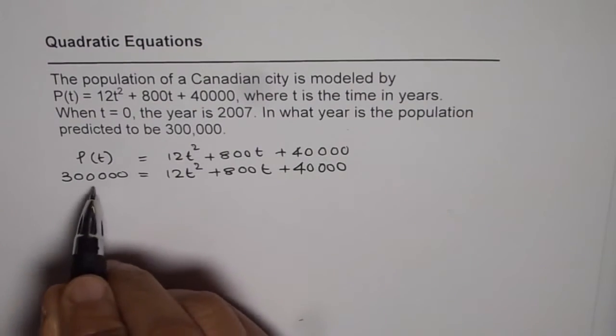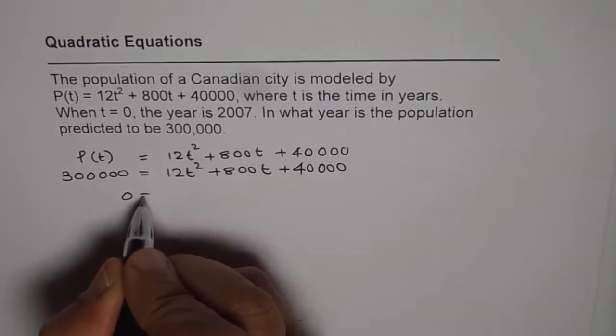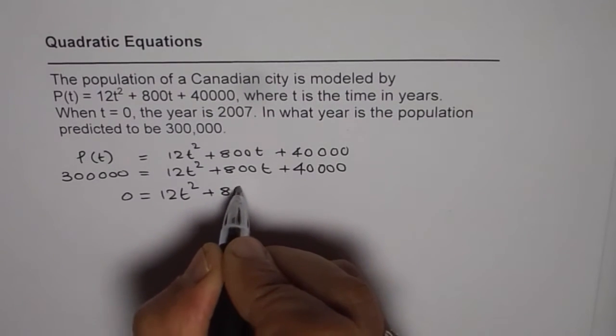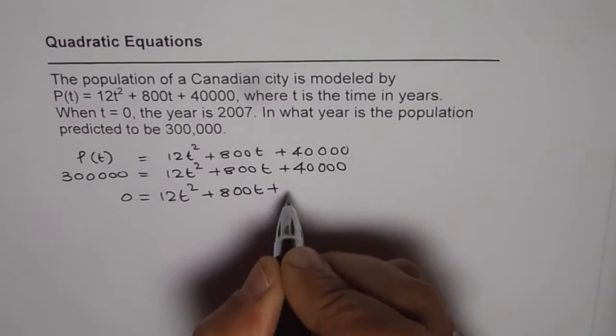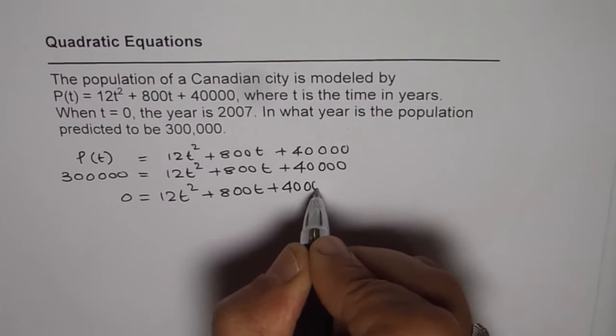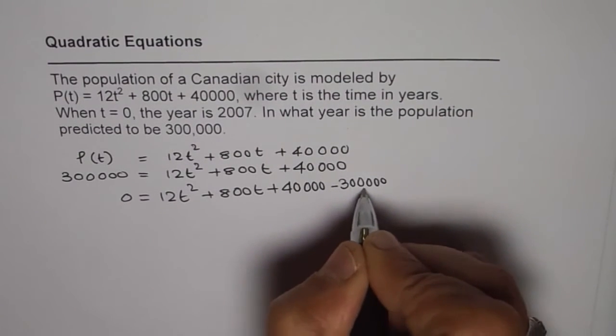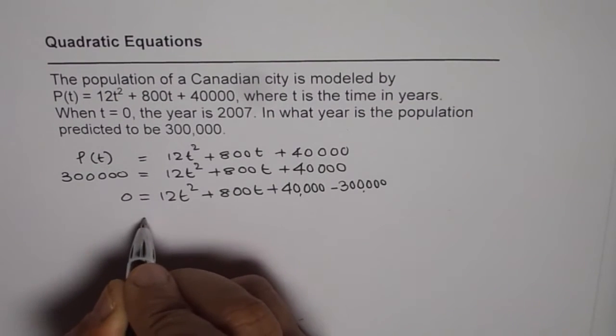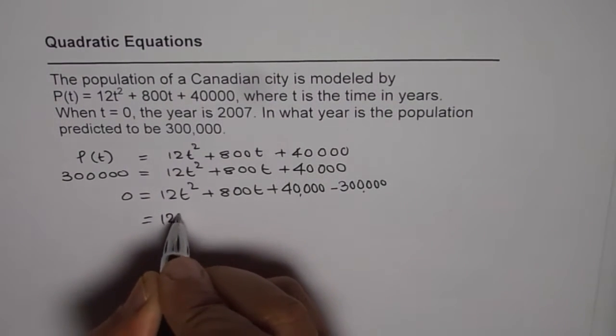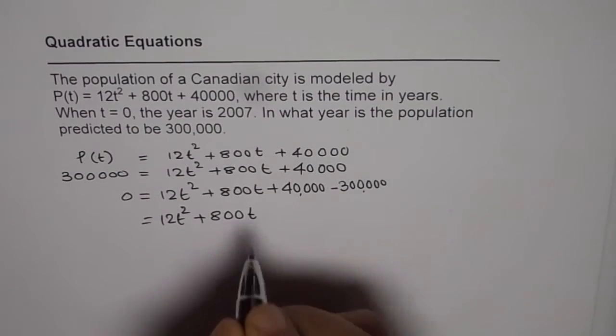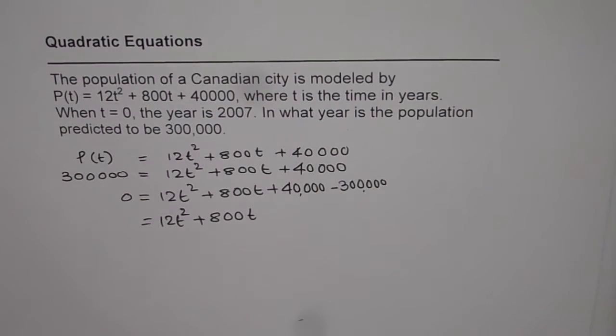We get 300,000 = 12t² + 800t + 40,000. Now we can bring it to the right side. So we get 0 = 12t² + 800t + 40,000 - 300,000. So it's good to write like this. So we have 12t² + 800t and how much do we get this? 260,000, use calculator.